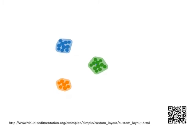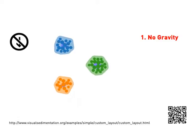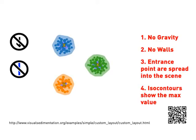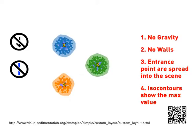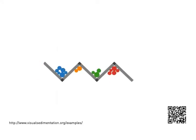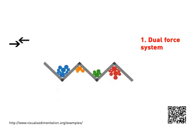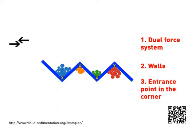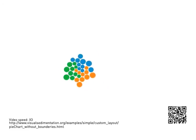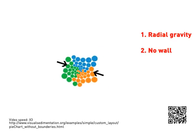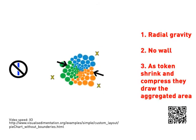The heat chart uses no gravity and no walls. Entrance points are spread throughout the scene, and ISO contours show the maximum value. The corner chart uses a dual-force system with walls and places entrance points in the corners. The pie chart without boundaries uses radial gravity and no walls; as tokens shrink and compress, they draw the aggregated area.